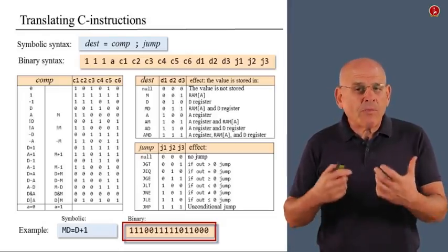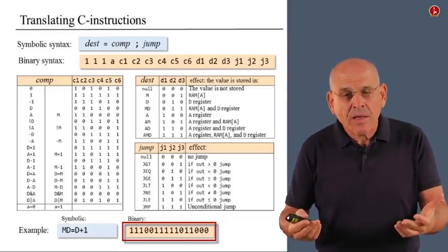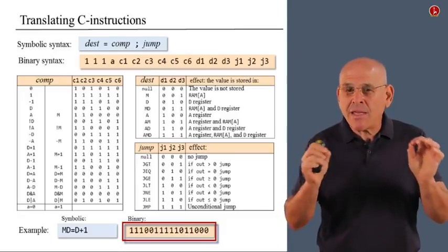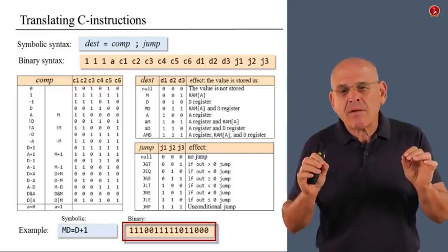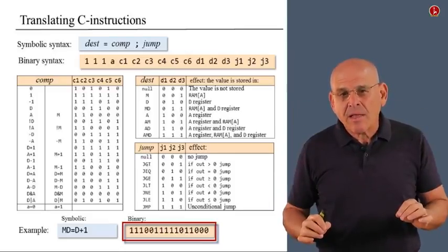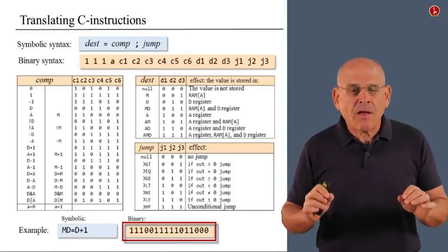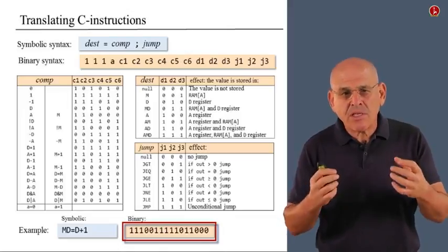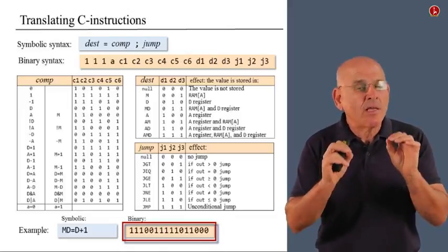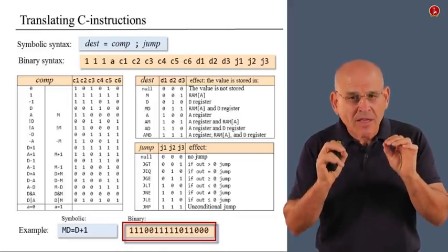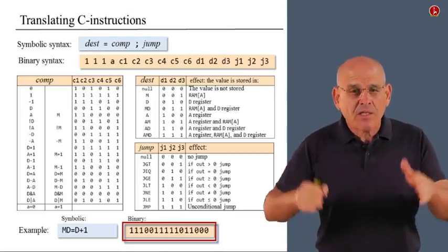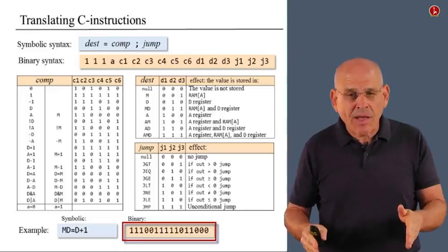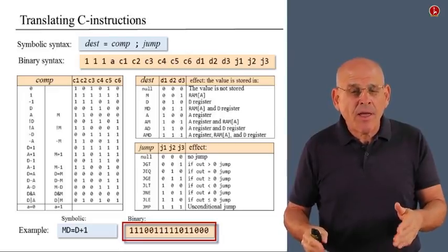Now, when we say that we generate binary code, there may be some misunderstanding here. So let me clarify it. We basically generate a text file that consists of two characters only, 0 and 1. But they are treated as characters, as ASCII or Unicode characters. So we have this text file that we write, which consists of 0s and 1s only.